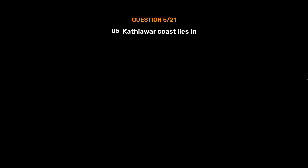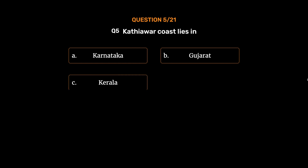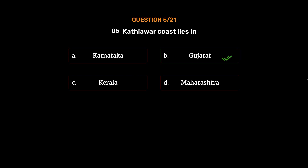Question number 5: Kathiawar coast lies in — Option A: Karnataka. Option B: Gujarat. Option C: Kerala. Option D: Maharashtra. The correct answer is Option B, Gujarat.